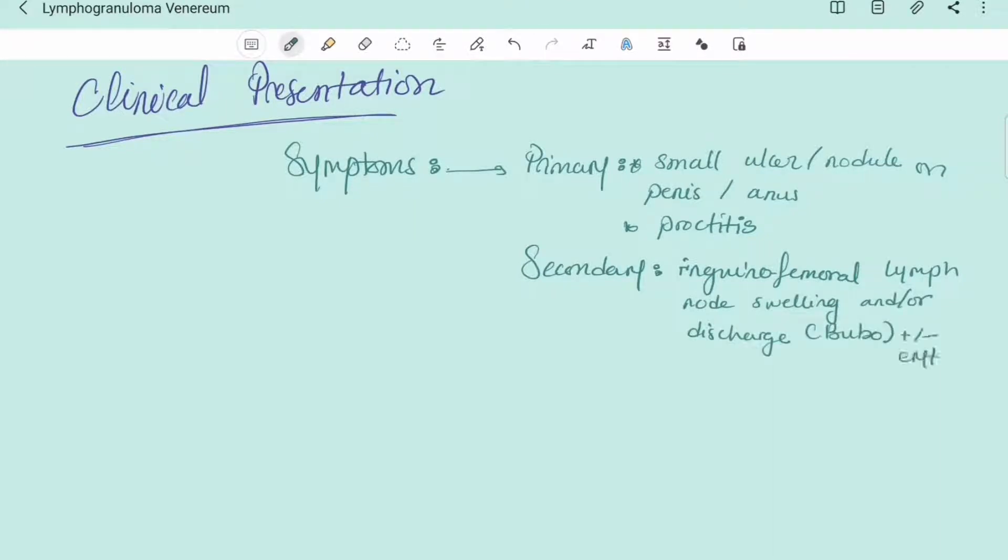The tertiary symptoms are chronic proctitis, fistulae, strictures, and genital edema and scarring of vulva in females, which is called esthiomene.